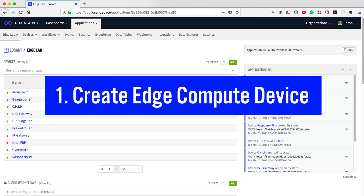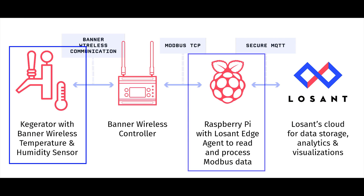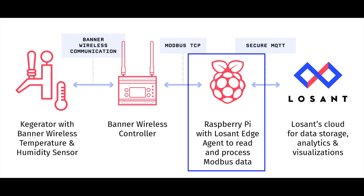First, we're going to create some devices in Losan. Our example includes two devices: a kegerator and a Raspberry Pi. The Raspberry Pi is where we will deploy our Edge workflows because it is the gateway reading local Modbus. The Raspberry Pi will be our Edge Compute device. Let's create it within Losan.